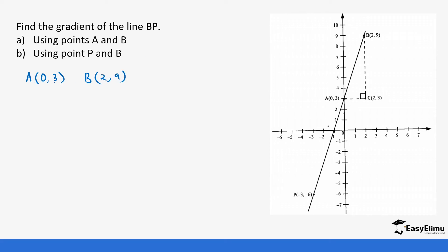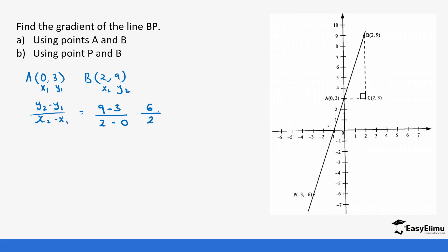Point A gives us x1 = 0 and y1 = 3. Point B gives us x2 = 2 and y2 = 9. Remember, a coordinate has values on the x-axis and y-axis. Always identify those values before starting your calculation. So it's y2 minus y1 over x2 minus x1: that is 9 minus 3 over 2 minus 0, giving us 6 over 2. Simplified, the gradient is 3.